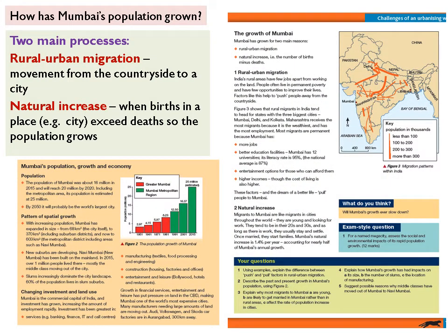How has Mumbai's population grown? Task three looks at two main processes that cause cities to grow: rural to urban migration and natural increase. Rural to urban migration is the movement of people from the countryside to the city. Natural increase is where births in a place exceed deaths and the population naturally grows. Because cities tend to be quite young places, they have quite a large number of births. The textbook pages provided will help greatly with task three, and the box on the left with the bar graph is very useful.